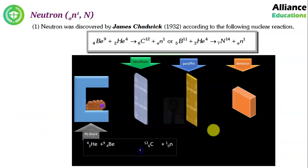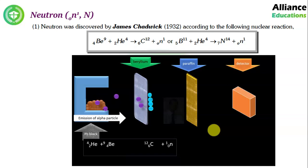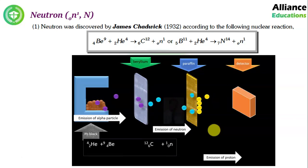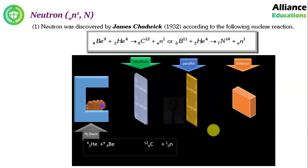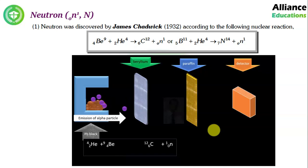We will start with today's topic. In the last lecture, we saw the discovery of proton and electron — cathode rays and anode rays. We will continue to discuss the discovery of neutron. First of all, neutron was discovered by James Chadwick in 1932.